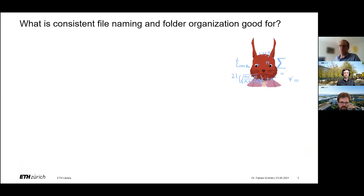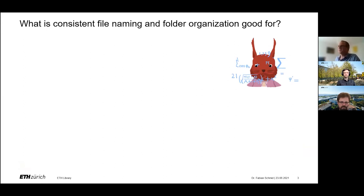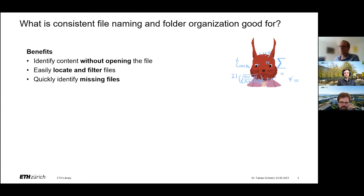What is this actually good for? Consistency in file naming and folder organization — at least some benefits are in identifying the content of your files without opening them. So it's less time. And with this, you can also filter and locate files within a folder, and you can identify if there are some files missing. Files are easier to find within your file folders, you can avoid duplication of files, and you simplify collaborative work, because people can understand your folder structure and your file names. And of course, this all makes the conduction of your research project more efficient.